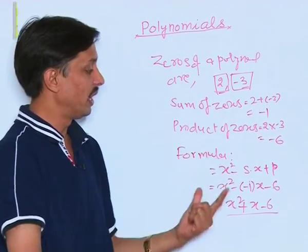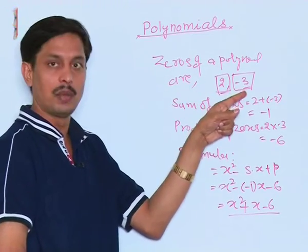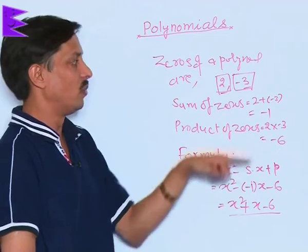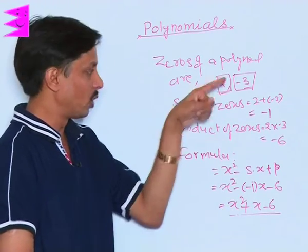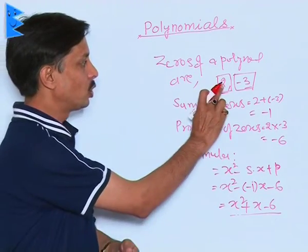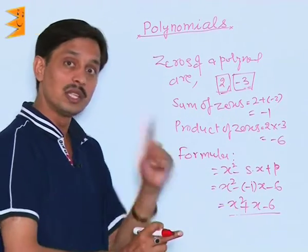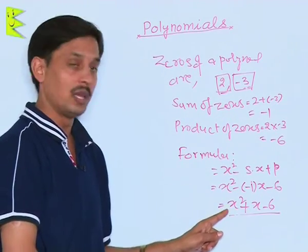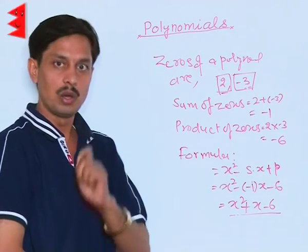We can obtain the quadratic polynomial back if zeros are given or if the quadratic polynomial is given we can obtain the zeros and we can also verify the relation. Just like this is 2, this is minus 3, their sum is minus 1. By using the relation formula minus b upon a we can verify, similarly we can verify the product also.